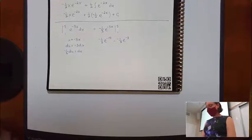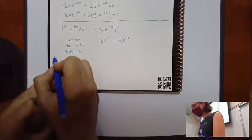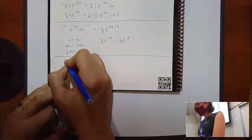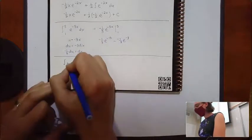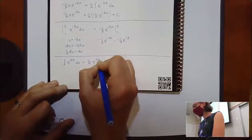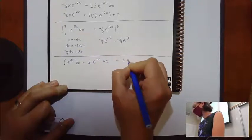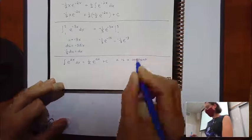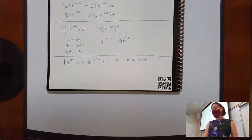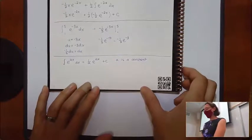It's okay to not write out the u-substitution on these, but if you're not going to write it out you really should memorize the generic integration formula: the integral of e to the ax dx is one over a times e to the ax plus c, where a is a constant. If you have it memorized with a equals one, then for anything else you have to do a u-substitution.